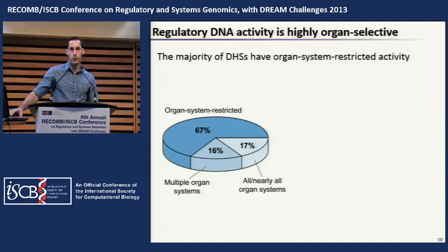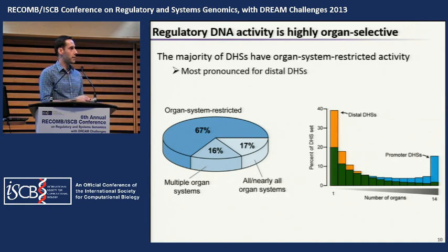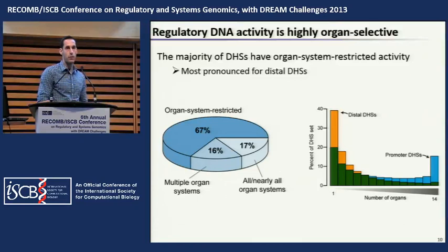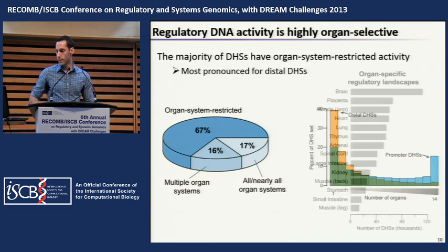Overall, the vast majority of elements are organ-restricted: 67% of DHSs are highly active only in a single organ or organ system, whereas 16% are active across multiple organ systems and 17% are constitutively active. This highly organ-restricted activity is especially pronounced for distal DHSs far from promoters — distal DHSs are twice as likely as promoter DHSs to be active only in a single organ, while promoter DHSs are much more likely to be constitutively active.